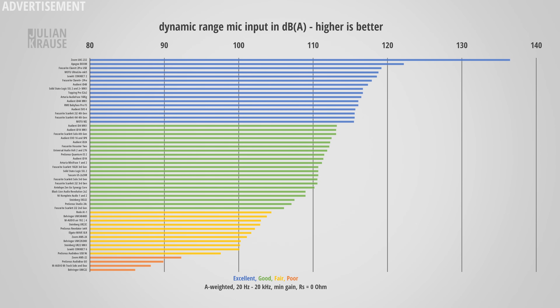Let's quickly talk about noise performance, starting with the dynamic range — the ratio of the strongest signal the interface can capture to its noise floor. This is especially interesting in dynamic recording situations like recording drums with condenser microphones. The ID48 is right up there in the excellent category with 107.6 dB A-weighted. That speaks for itself.